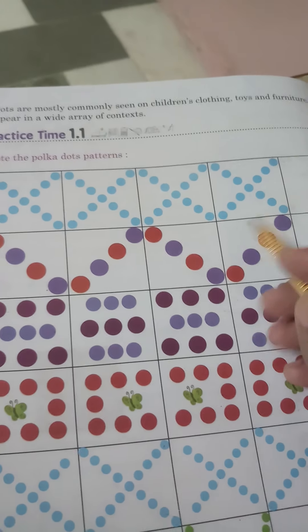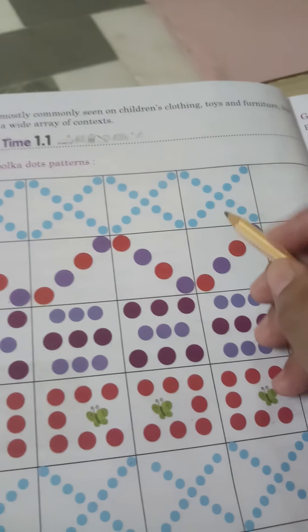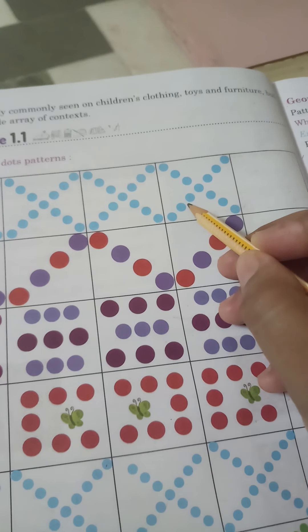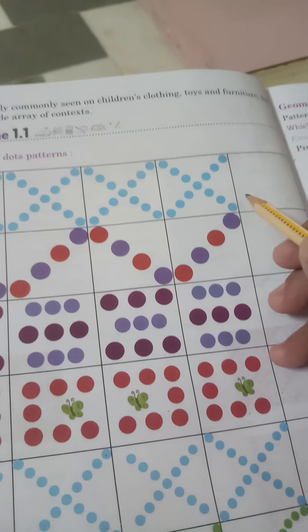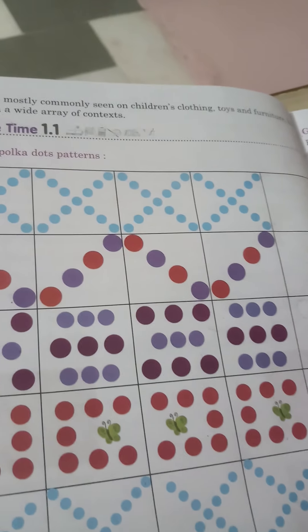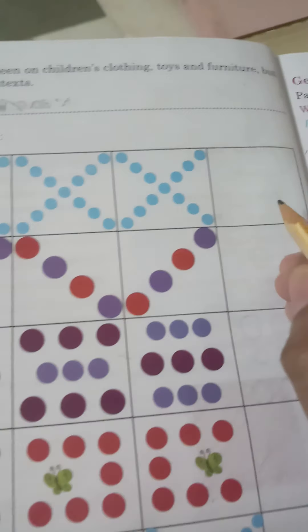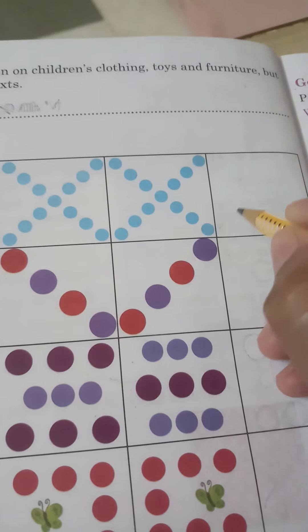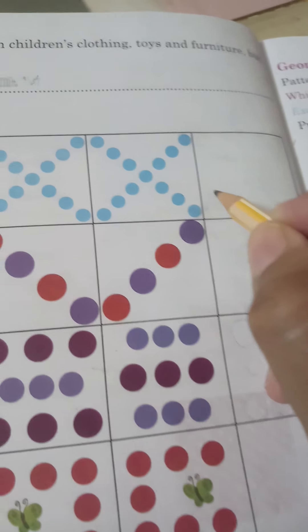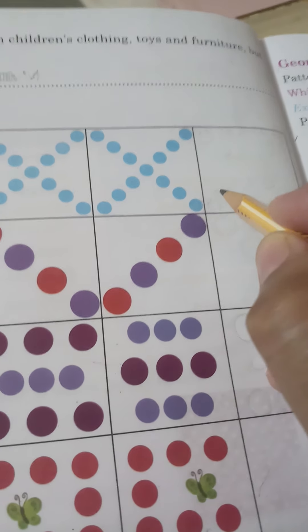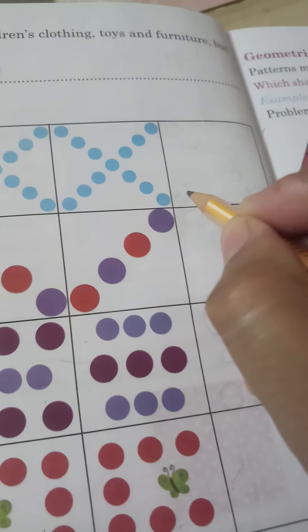We will count the dots: 1, 2, 3, 4, 5, 6, 7. Now we will start the crossing dot: 1, 2, 3, 4, 5, 6, 7.